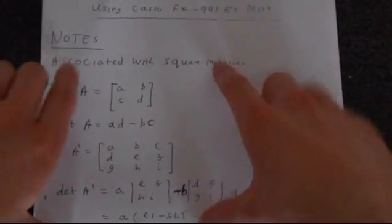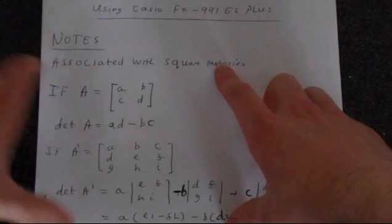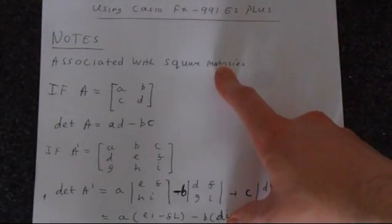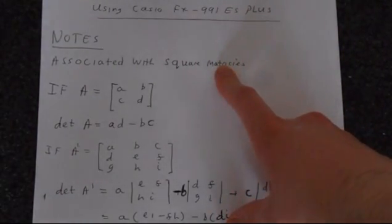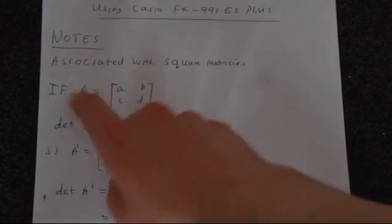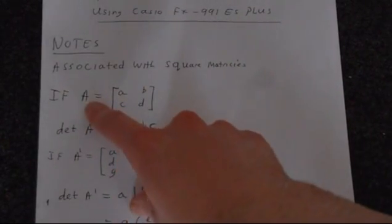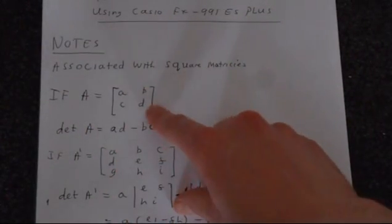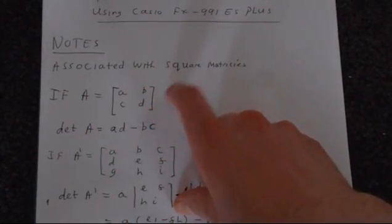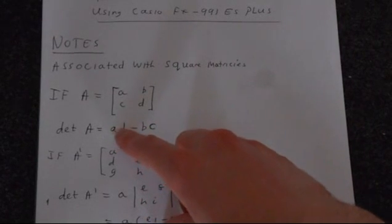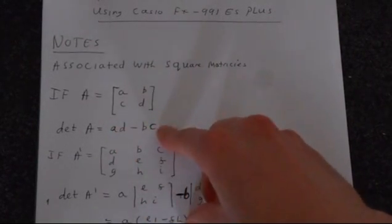A matrix determinant is always associated with a square matrix. So if you don't have a square matrix, you're not going to get a determinant. So if we have a matrix A with elements A, B, C, D, then the formula for the determinant is AD minus BC.